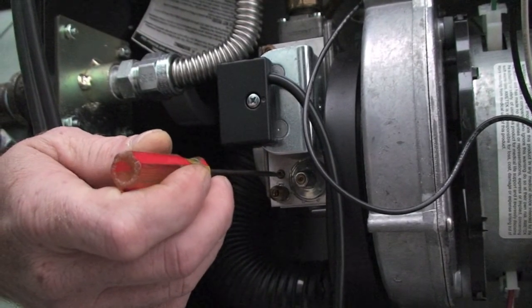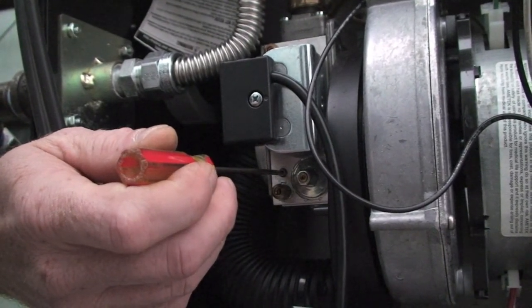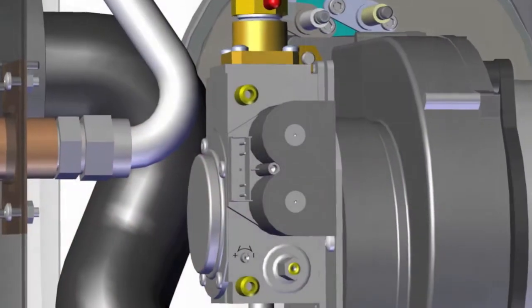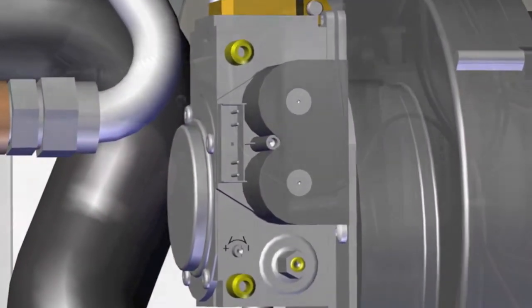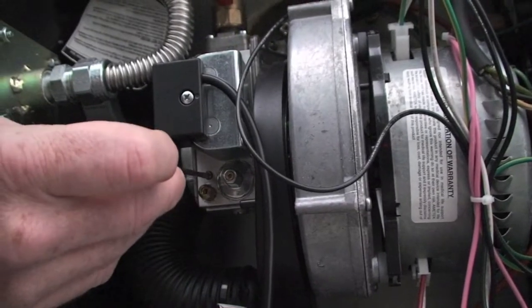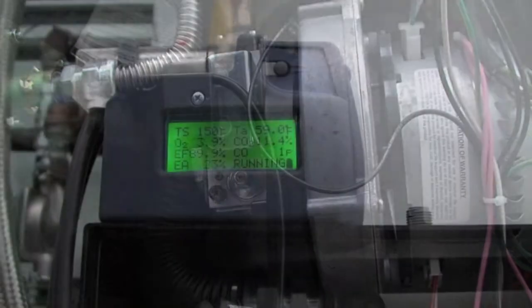The throttle screw is used to adjust overall combustion and should be adjusted in high fire. If combustion levels need to be increased, turn throttle screw in small increments counterclockwise and allow analyzer to sample.